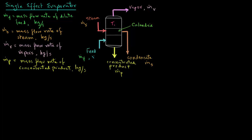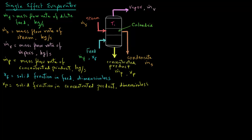We also have the solid fraction in the feed as xf, which is dimensionless. Similarly, the solid fraction in the concentrated product is denoted by xp, which is also dimensionless. We can write the mass balance by looking at what is entering the system and what is exiting the system.